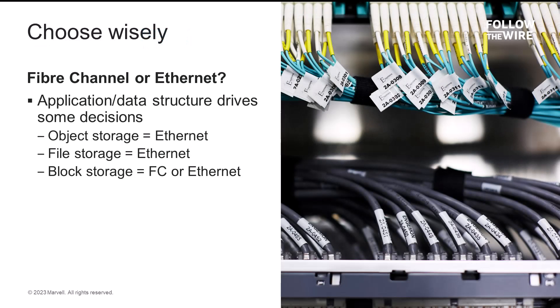Whenever there's a choice, that means there's a difference that needs to be understood. For storage networking, this usually applies to choosing between Ethernet or Fiber Channel transports. The data structure is the first thing that will dictate the connectivity option. If the data structure is object or file-based storage data, then Ethernet is the choice, because Fiber Channel only supports block storage. However, if block storage is in play, then there is a choice between Fiber Channel and Ethernet, and this is where we're going to focus for this video.